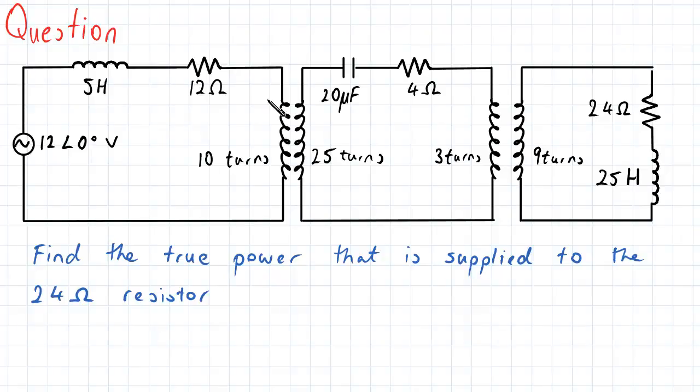This first circuit here has a voltage source connected to it with 12 volts magnitude and zero phase, and this is connected to the second circuit through a transformer with a turns ratio of 10 to 25. Then we have another circuit, and the ratio is 3 to 9, and then we have another circuit with a 24 ohm resistor and a 25 Henry inductor. So the question is asking us to find the true power that is applied to this 24 ohm resistor.